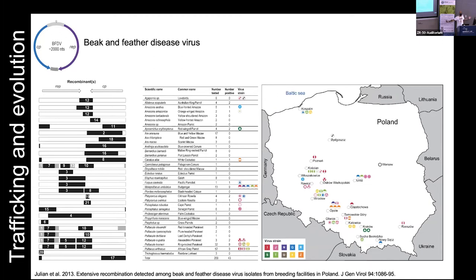Breeding facilities are notorious for bringing animals from all over the world into aviaries. We travel to hubs, big airports, we're stressed — our immune systems are slightly down — we're meeting people from all over the world, making airports an awesome hub for transmission of viruses. The same applies to breeding facilities, as seen in work we did in Poland: recombination is rife across a variety of parent species. We see genomes of viruses that are 70% recombinant — only 30% is ancestral. These viruses are having a field day through legal and illegal trafficking of animals.